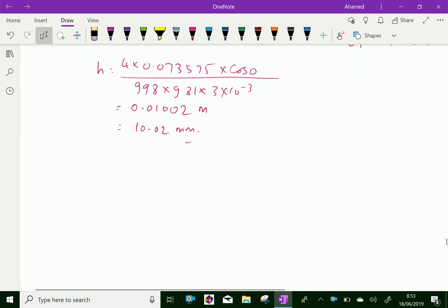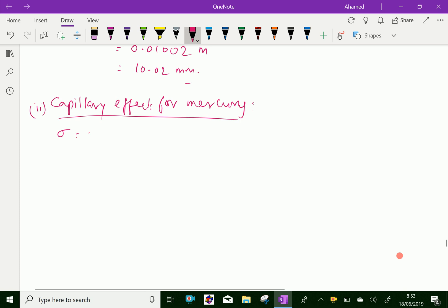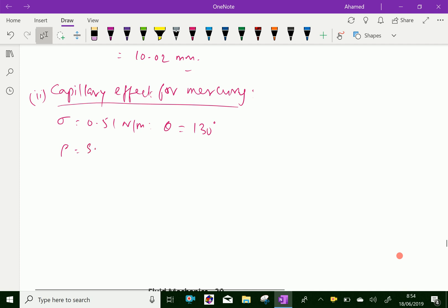Now next, capillary effect for mercury. Here sigma equal 0.51 Newton per meter and theta is 130 degree and rho, that is density of mercury, is specific gravity into 1000. Specific gravity of mercury is 13.6 into 1000 equal 13,600 kg per meter cube.